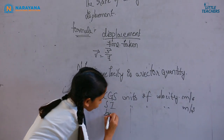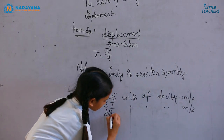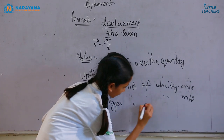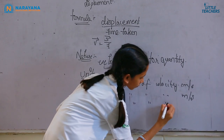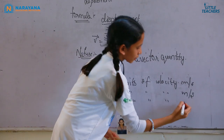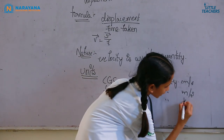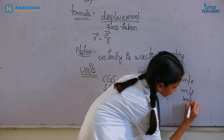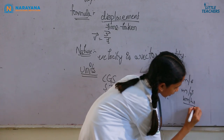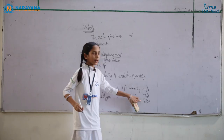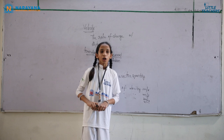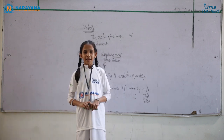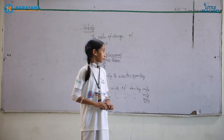Now, the bigger unit of velocity is kilometer per hour. This kilometer per hour is used to measure long displacements which take more time.